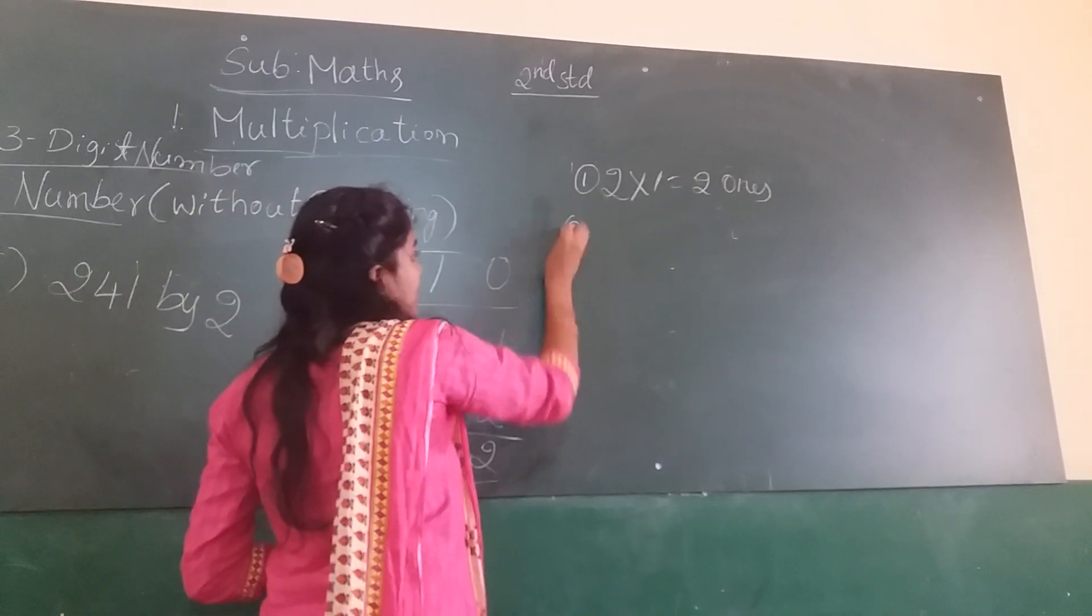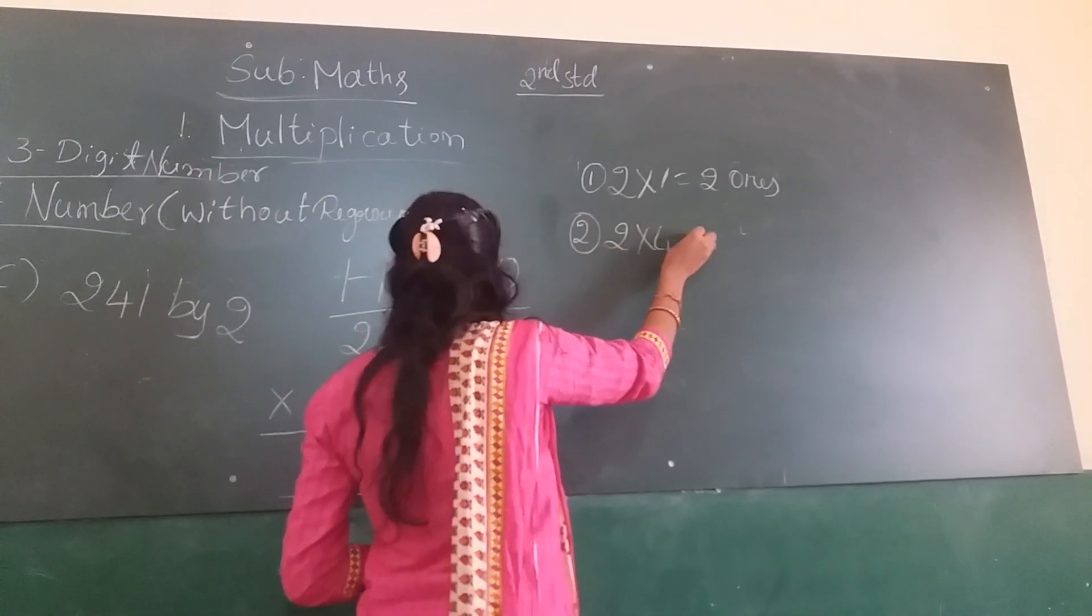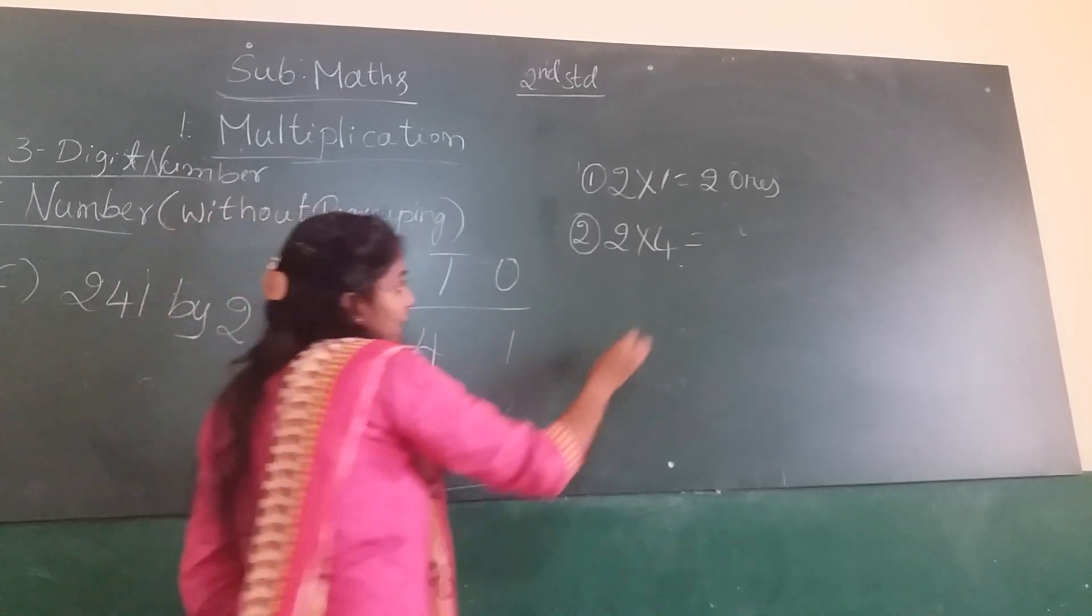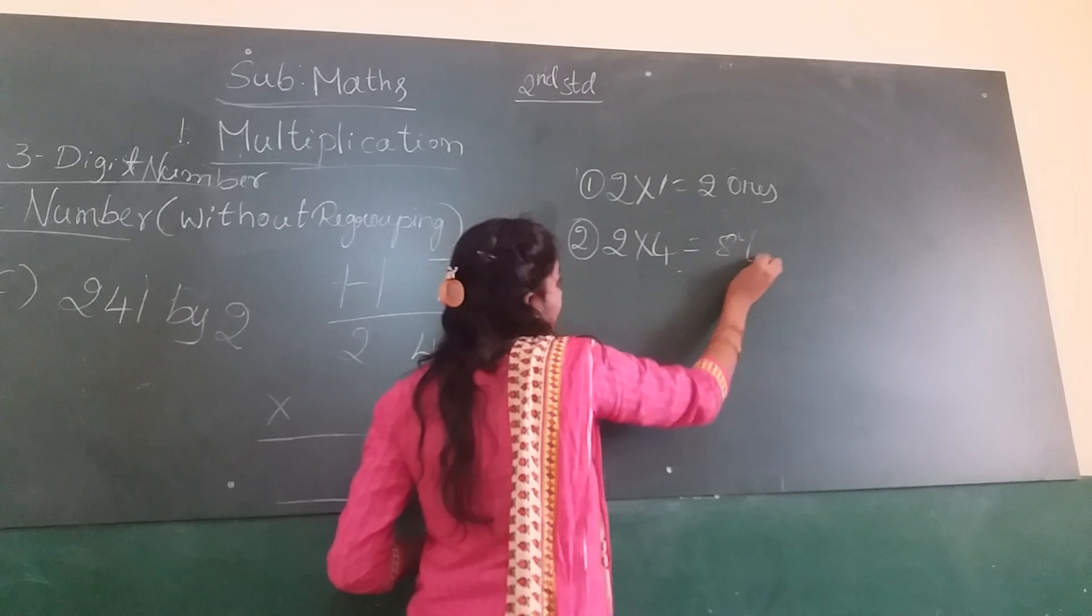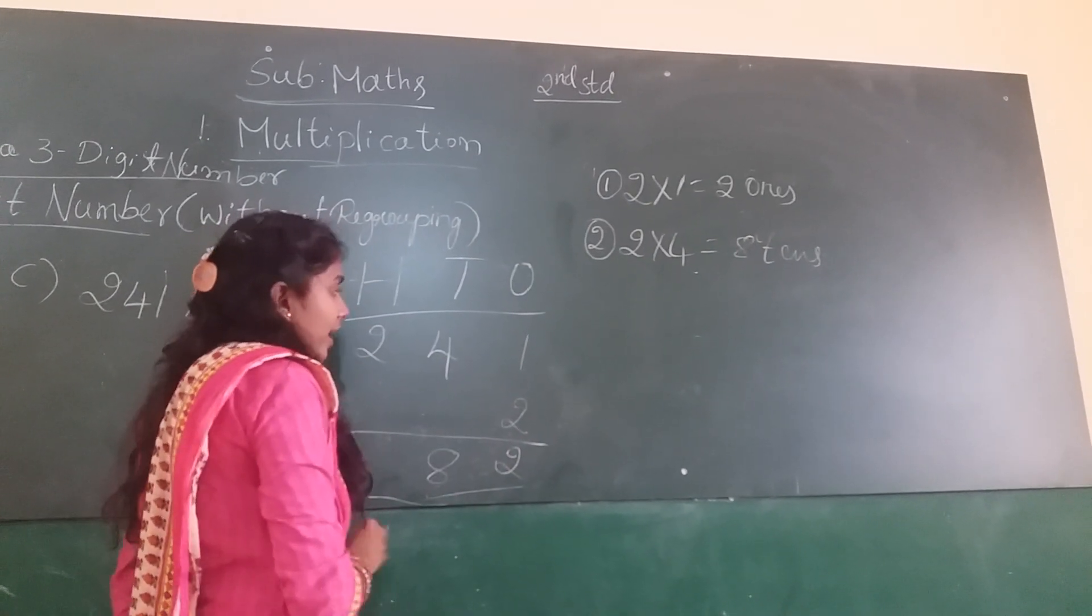Next, second step, tens column. 2 into 4. So again, 2 fours are 8. 8 tens. So write in tens column, 8.